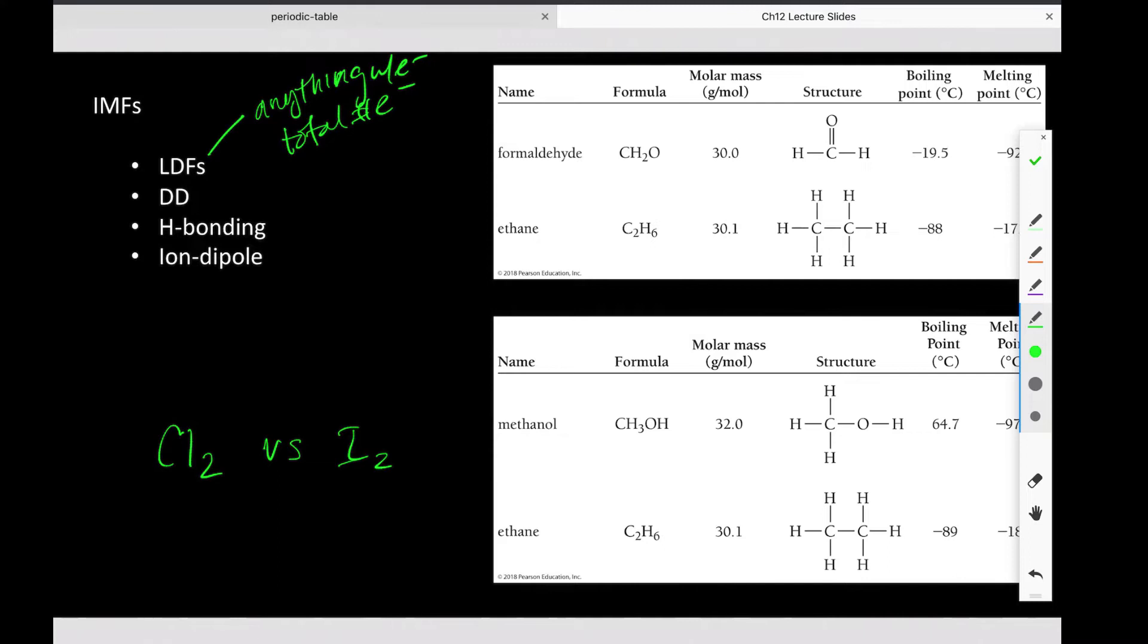Therefore, that one has a stronger London dispersion force or a stronger force of attraction between molecules, which means we can draw conclusions like this one probably has a higher melting point and boiling point, and a higher viscosity, if that's what we wanted to talk about if they were both liquids, and other properties like that. Makes sense?